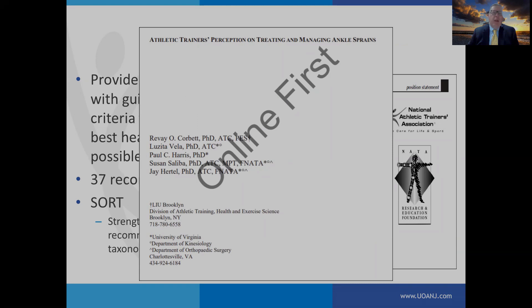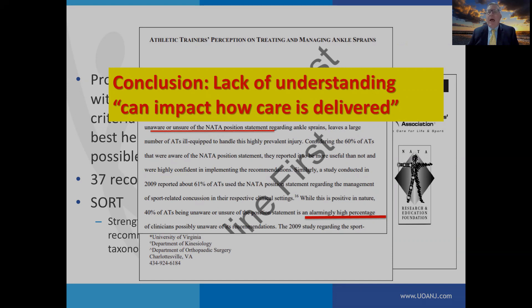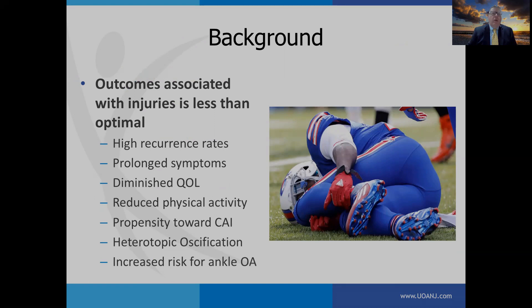A recent article was published in the Journal of Athletic Training by Corbett. They surveyed athletic trainers and found there's only a moderate understanding of ankle epidemiology, with almost 40% of athletic trainers unaware or unsure of the NATA position statement. The authors felt this was an alarmingly high percentage, and in their conclusion, they felt a lack of understanding can impact how care is delivered.